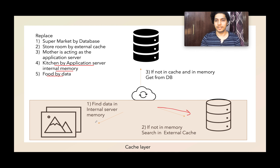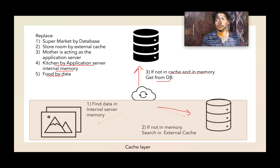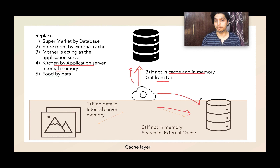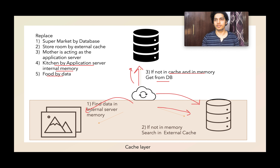If the data is not in these two places, then the application server will need to establish a connection with the database and get that information from it. It will query the database, and once queried, it will push the information back into the cache and also place this information in the application memory.